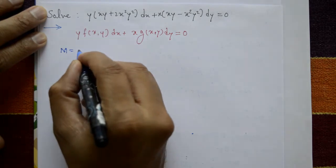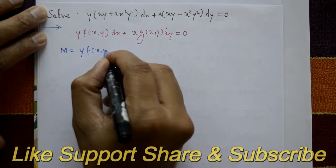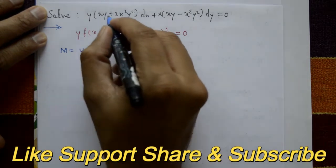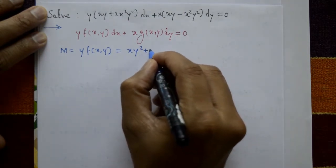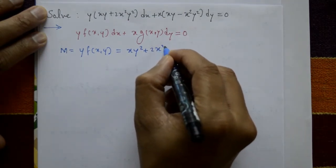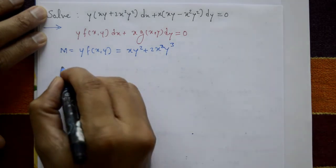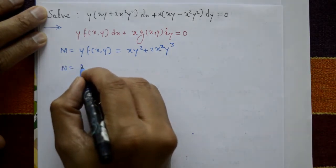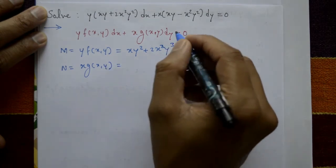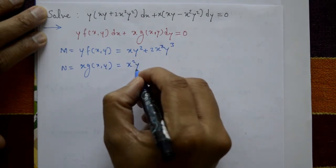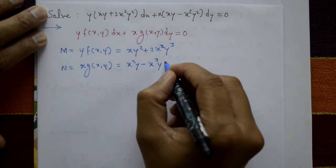Now M equals y·f(xy), which gives xy² + 2x²y³, and N equals x·g(xy), which gives x²y - x³y².